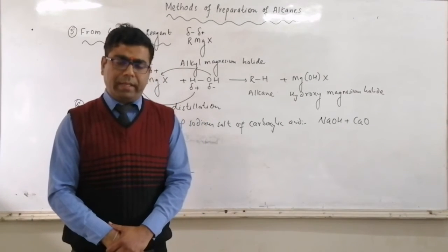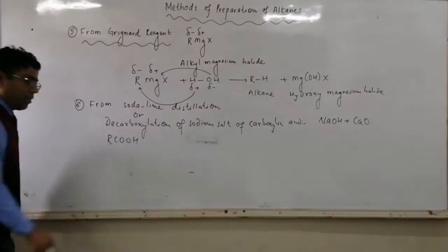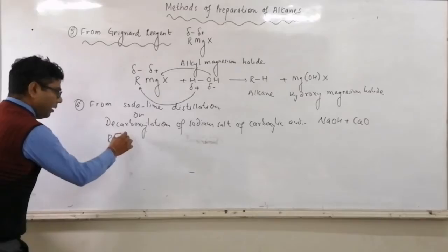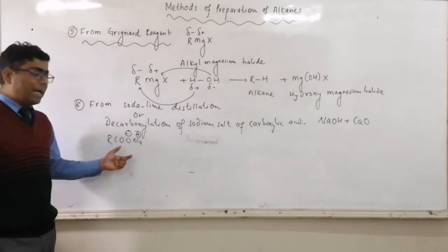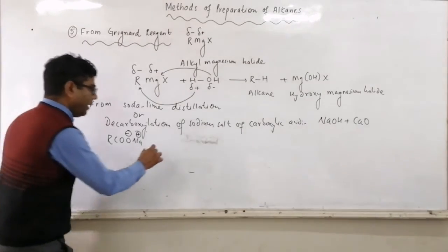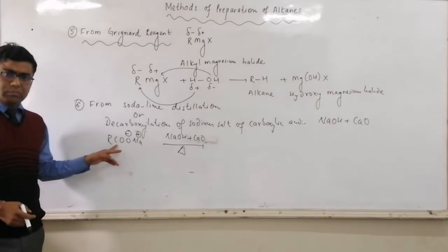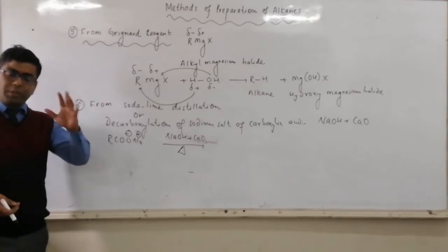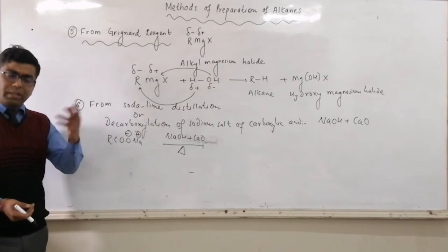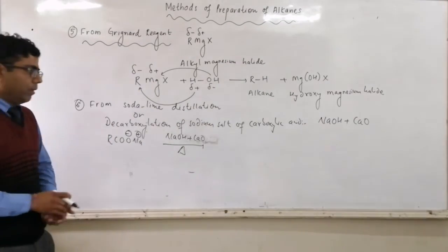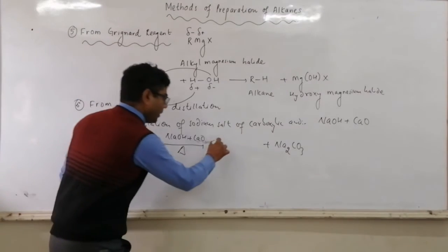As a reactant we will be using sodium salt of carboxylic acid. The symbolic representation of carboxylic acid is RCOOH. If the acid hydrogen is replaced by sodium metal, it becomes RCOONa — the sodium salt of carboxylic acid, which is called sodium carboxylate. When sodium carboxylate is heated at high temperature with soda lime, the COO part is removed as CO₂ — carbon dioxide is removed from the molecule. During removal, it combines with Na and oxygen and gets converted to Na₂CO₃, and the remaining R part gets converted to RH (alkane).